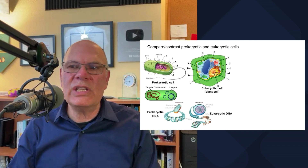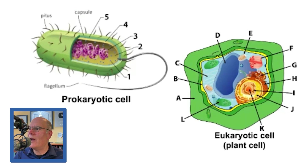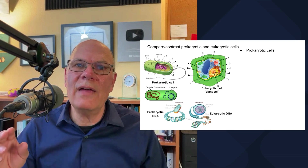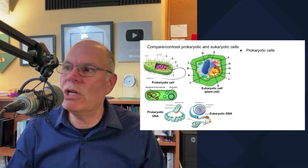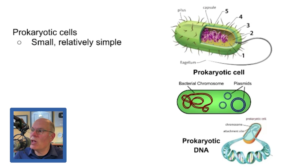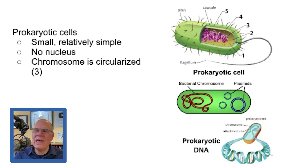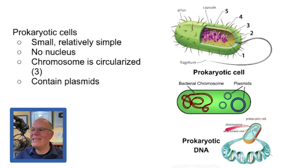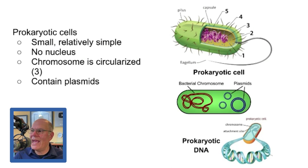A big concept is the difference between prokaryotic and eukaryotic cells. Prokaryotic cells have been around since the dawn of life — about 3.8 billion years ago. They are small and relatively simple, though extraordinarily complex. They have no nucleus — that's kind of what prokaryotic means. Their chromosome is circularized, meaning the end and beginning join to create one continuous loop. They contain extra-chromosomal pieces of DNA called plasmids, and they're found in two of life's three domains: archaea and bacteria.